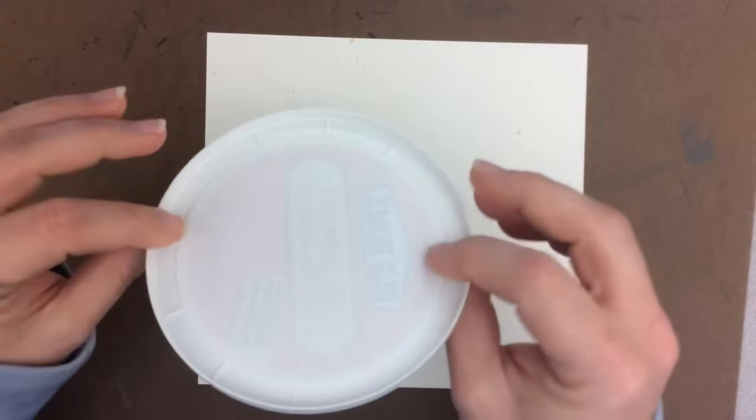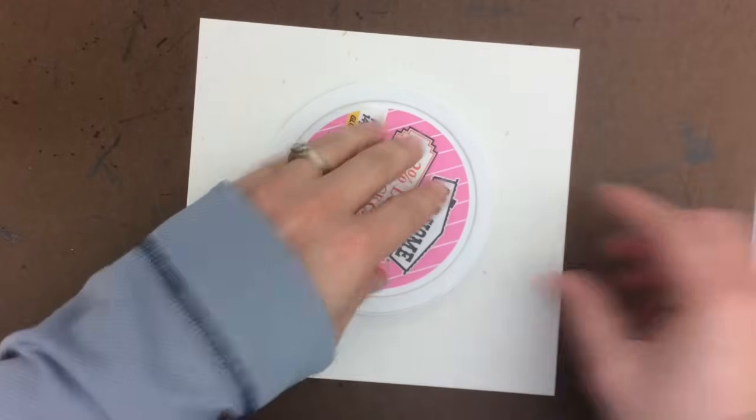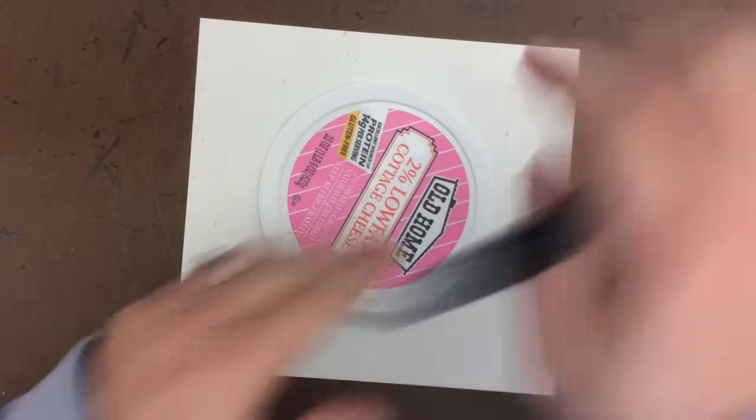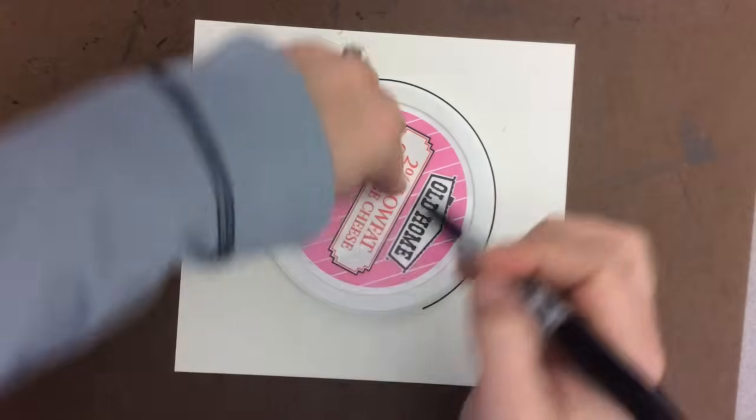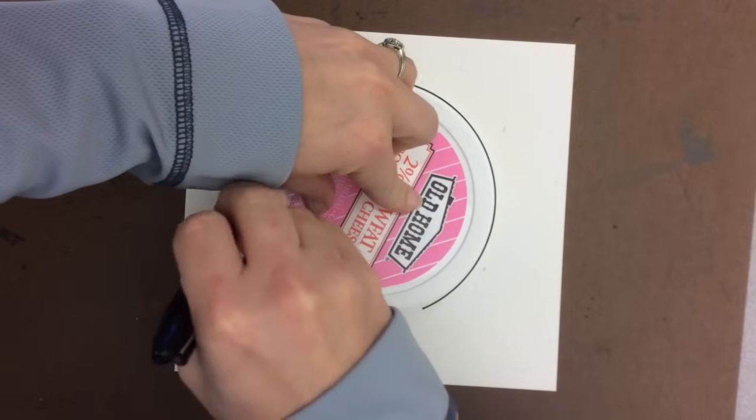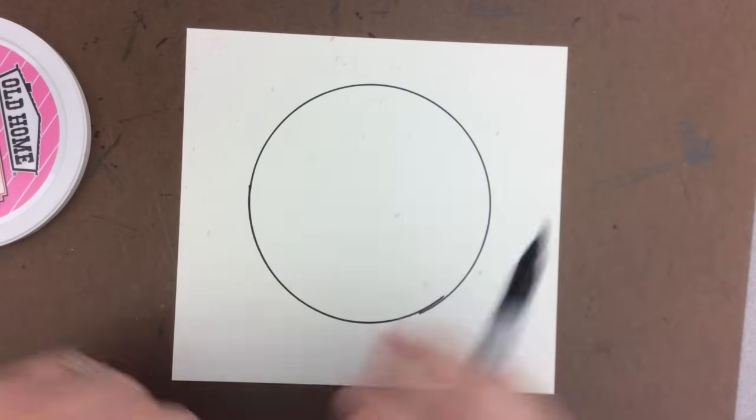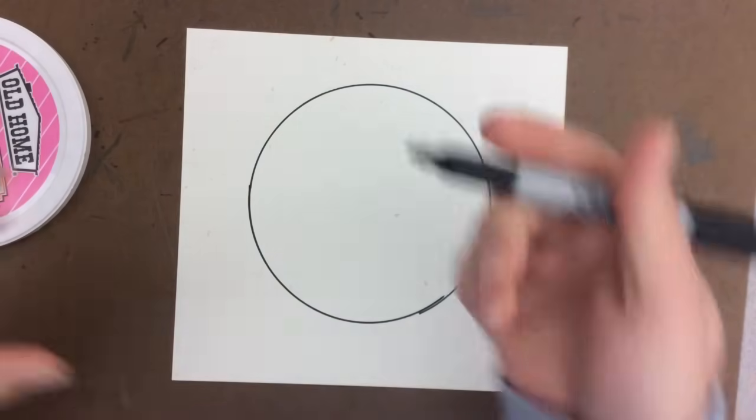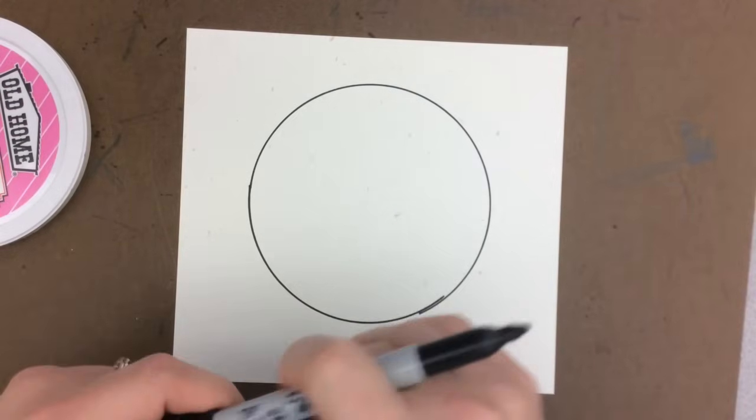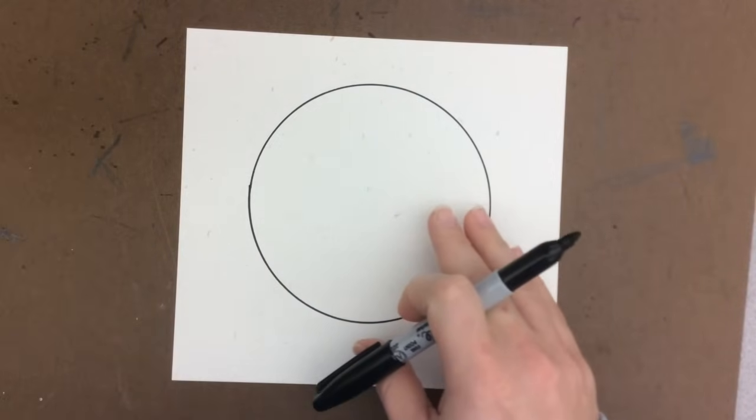We're going to start by making a circle and I'm just using a container top for a tracer. I hold it down with one hand and bring it around with another. I'm using a Sharpie today, but you can use a pencil to do this to begin with.